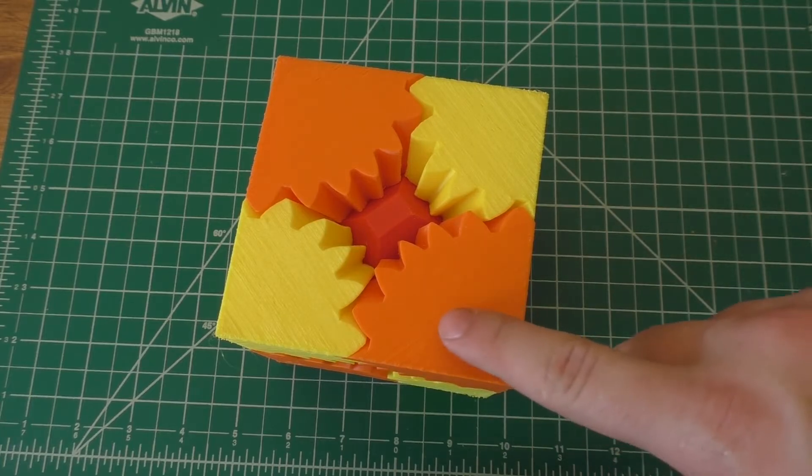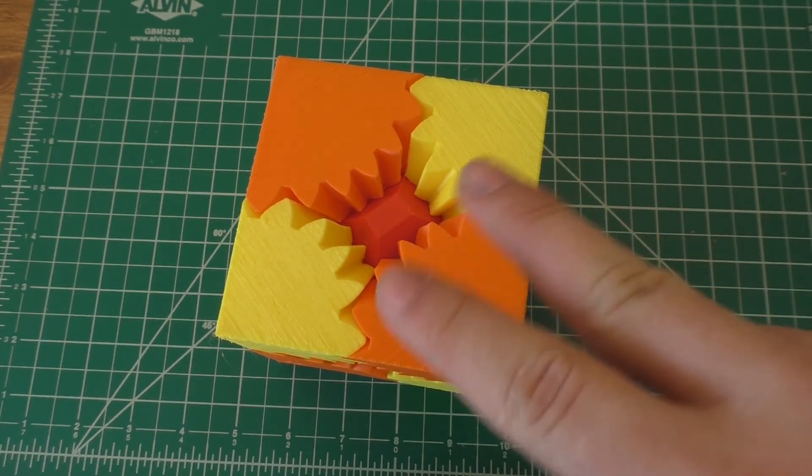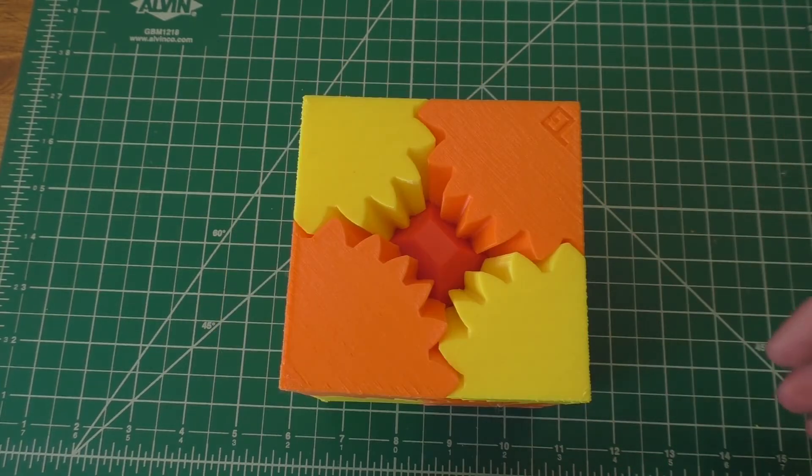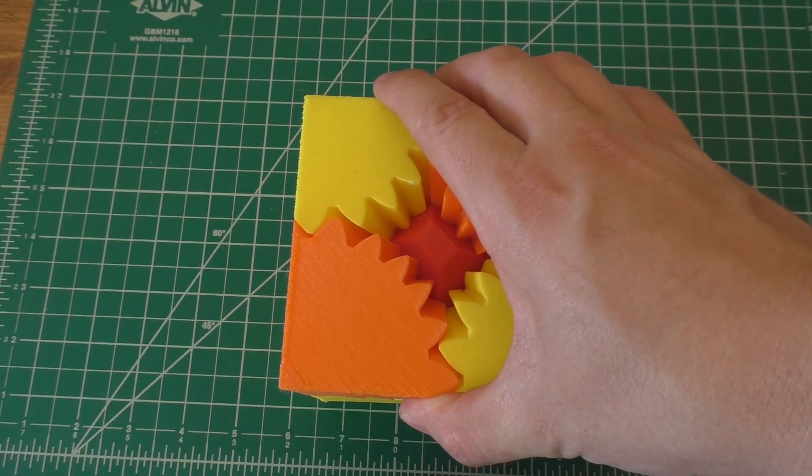This was printed with 0.2 millimeter layer heights, a 15% infill, and two shells. All right, that's about it for the Gear Cube. Hopefully you found that interesting or entertaining, and I'll see you next one, guys.